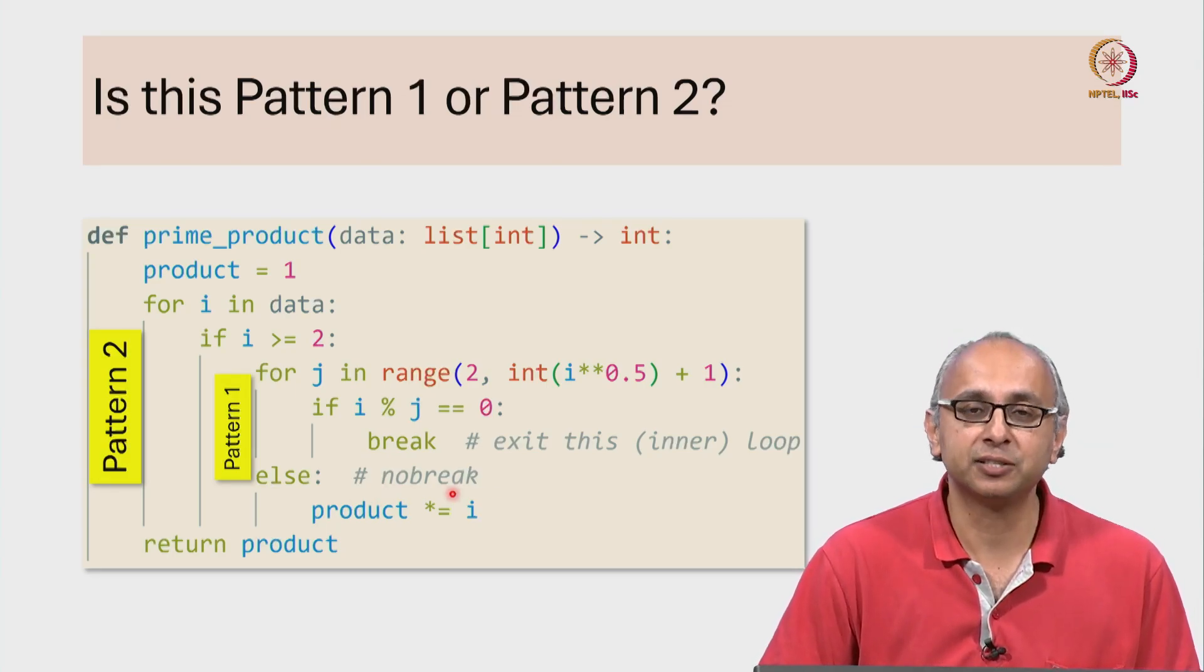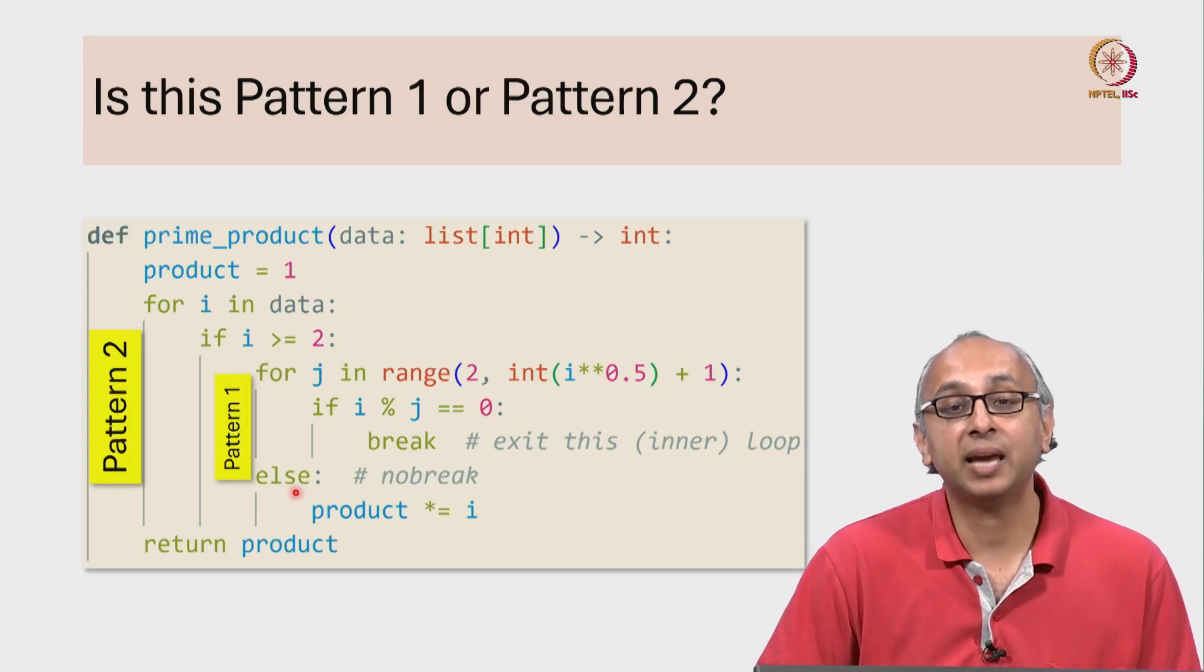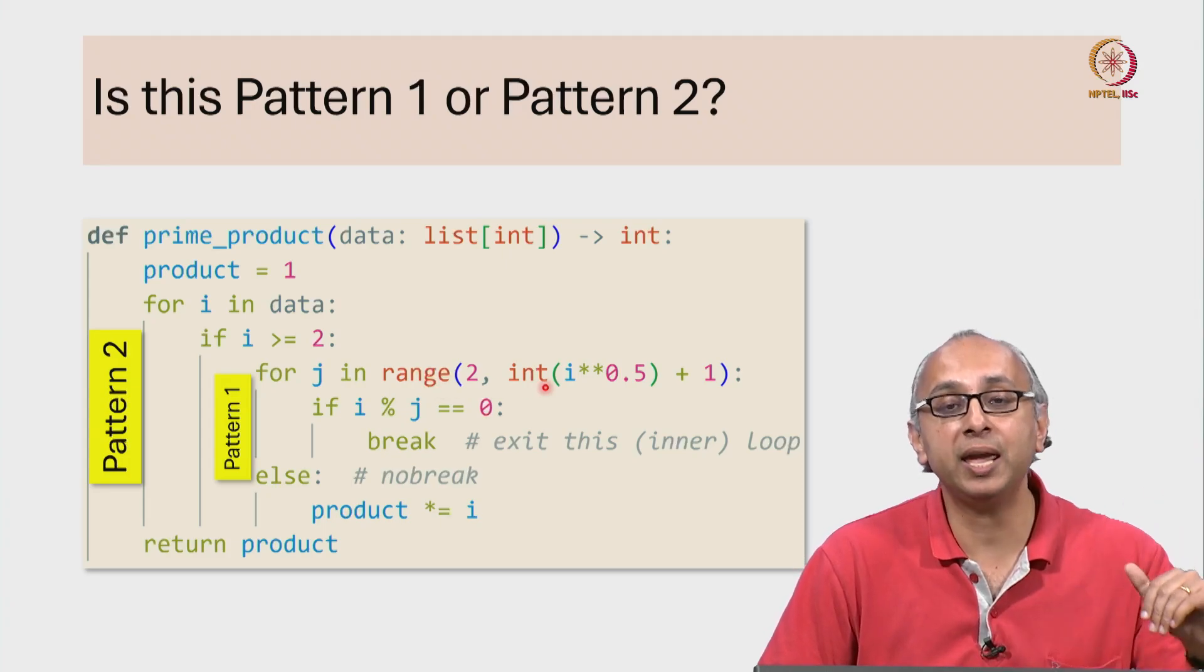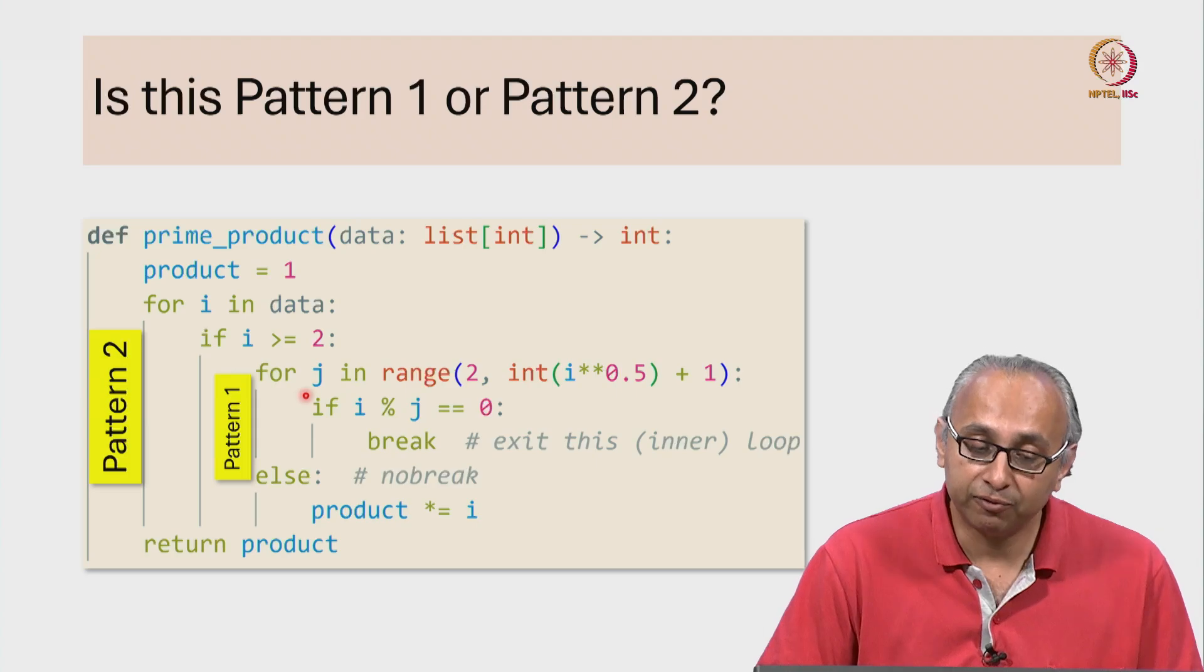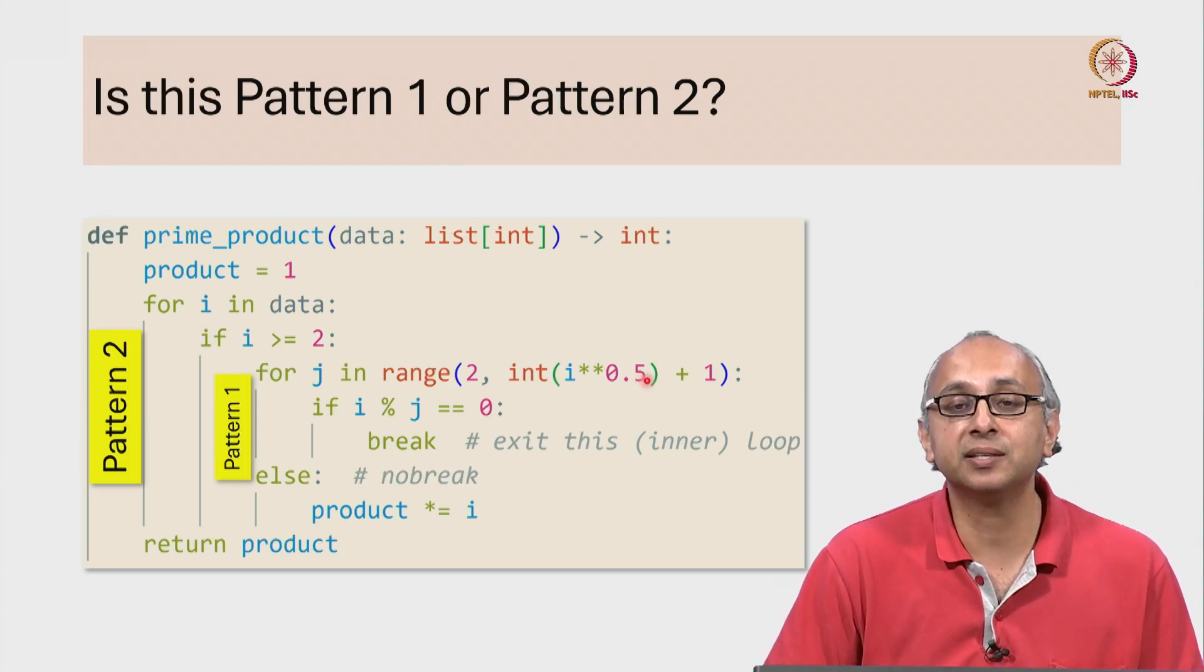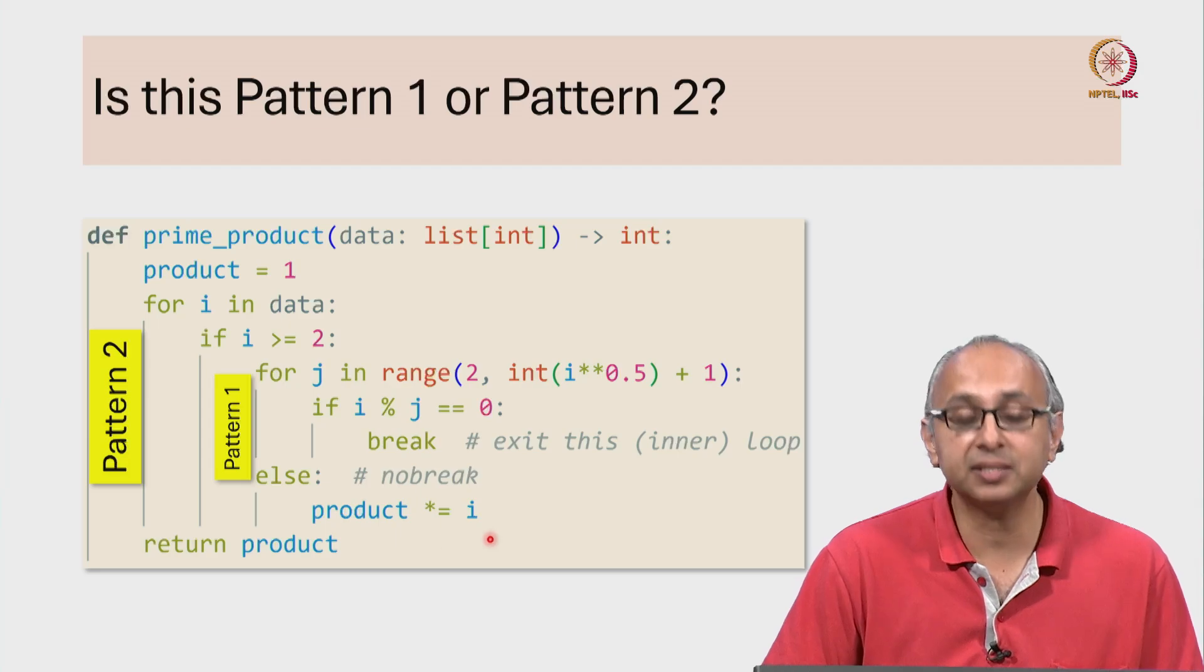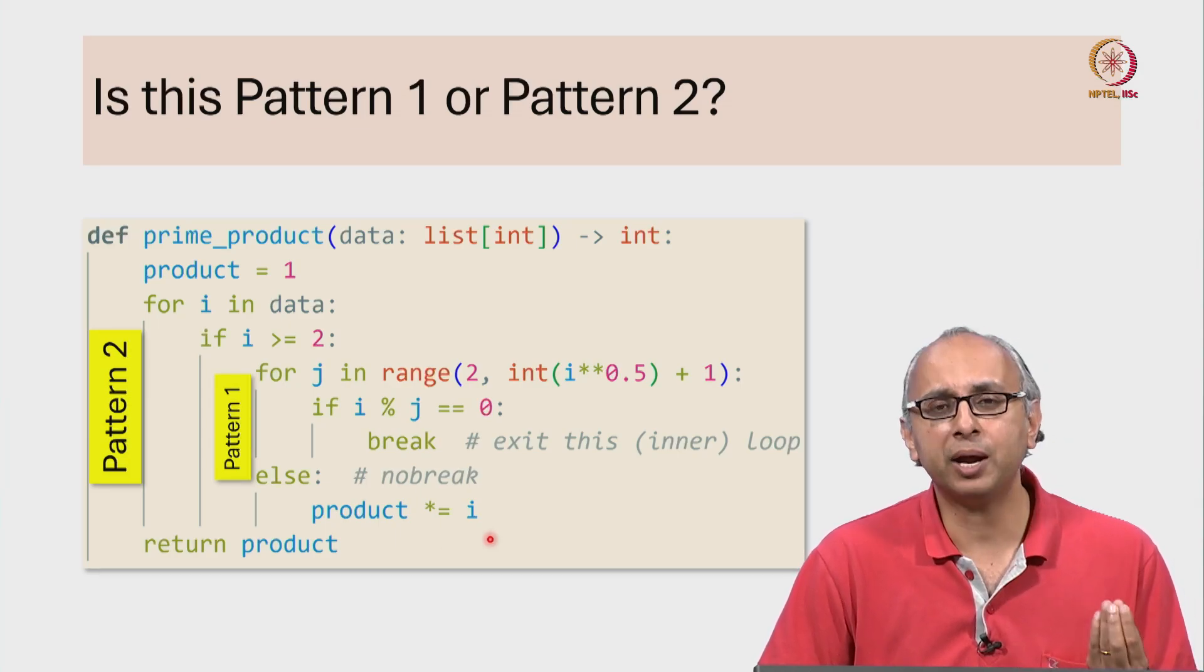If that happens then the loop exits normally and we will come here and in this case we know that this value i is a prime.